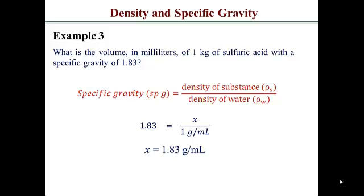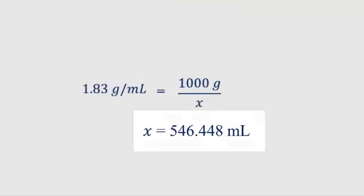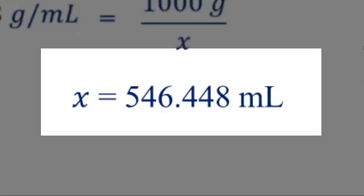So now we have our density. From here, we can use the density equation to determine the volume because we know the mass. We know the density. It's easy to determine the volume. So we're substituting the information. We have 1.83 grams per milliliter that we just found from there. And we can solve for our unknown, which ends up being 546.448 milliliters.